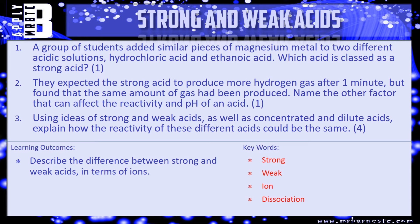Question two: they expected the strong acid to produce more hydrogen gas after one minute, but found that the same amount of gas had been produced. Name the other factor that can affect the reactivity and pH of an acid — in particular, what is it that can change that pH?